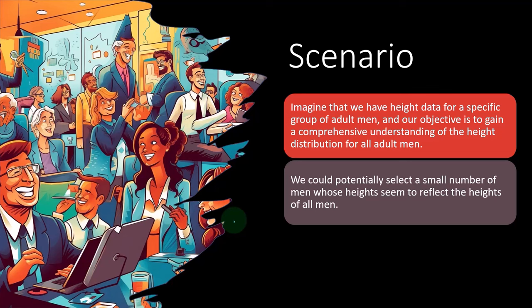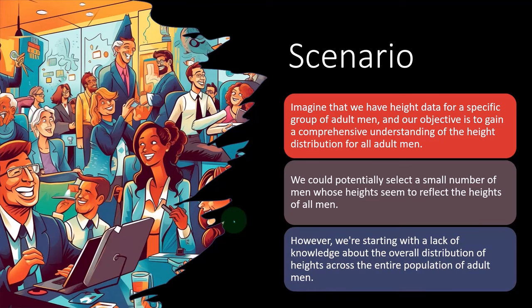However, we're starting with a lack of knowledge about the overall distribution of heights across the entire population of adults. So the problem with that is you're assuming that you know the answer to the problem that you're trying to solve. If we already knew the answer of the middle height, then picking a sample would be easy.